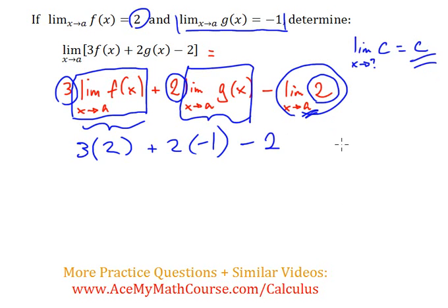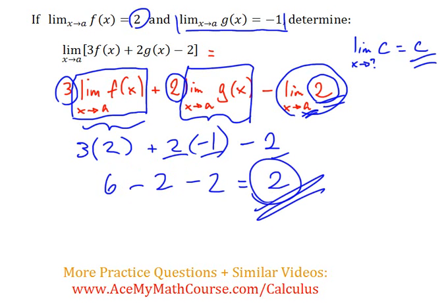So we just get 3 times 2 is 6, 2 times negative 1 is negative 2, minus 2. Six minus 2 is 4, minus 2 is 2. And that is our final answer.